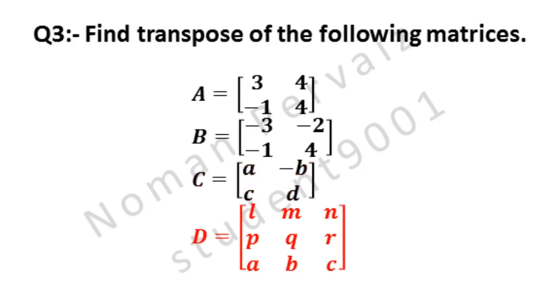Matrix C has 4 elements which are A, minus B, C, and D. Matrix D has 9 elements which are L, M, N, P, Q, R, A, B, and C.